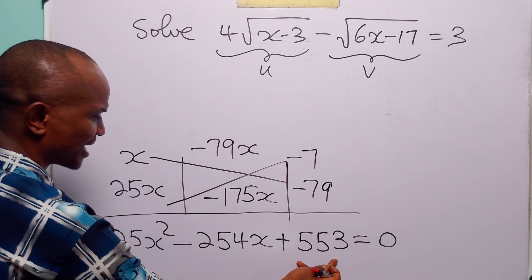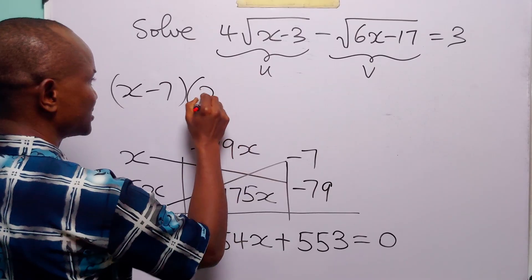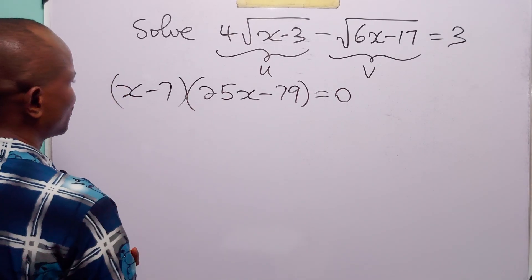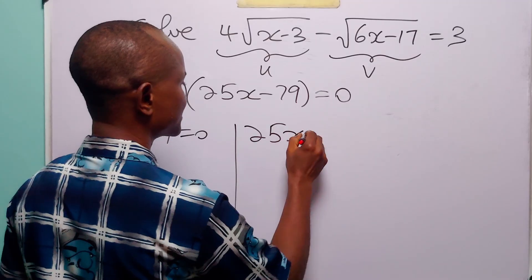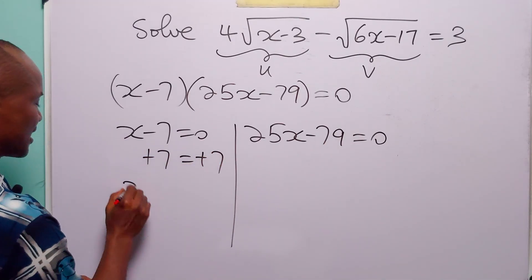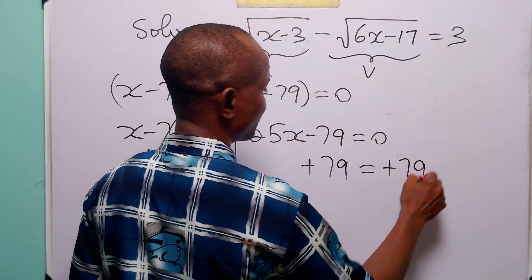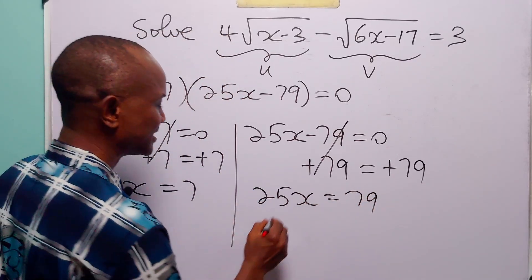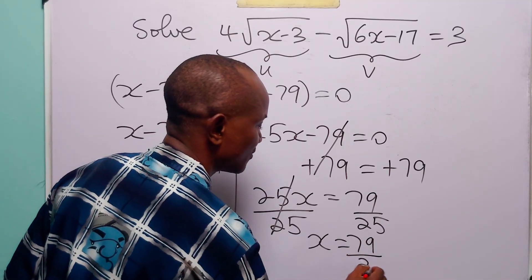Factorizing the left-hand side gives (x - 7)(25x - 79) = 0. Therefore either x - 7 = 0, giving x = 7, or 25x - 79 = 0, giving 25x = 79, so x = 79/25. We now have two apparent solutions: x = 7 and x = 79/25.